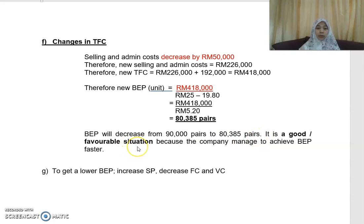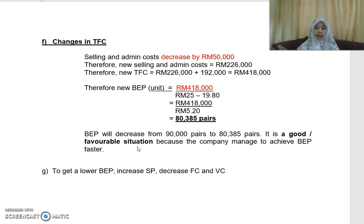Instead of 90,000 pairs, the break-even point decreases to 80,385 pairs. This is a favorable situation because you reach break-even earlier. After 80,385 pairs you are already enjoying profit, so reaching break-even earlier is a good outcome.